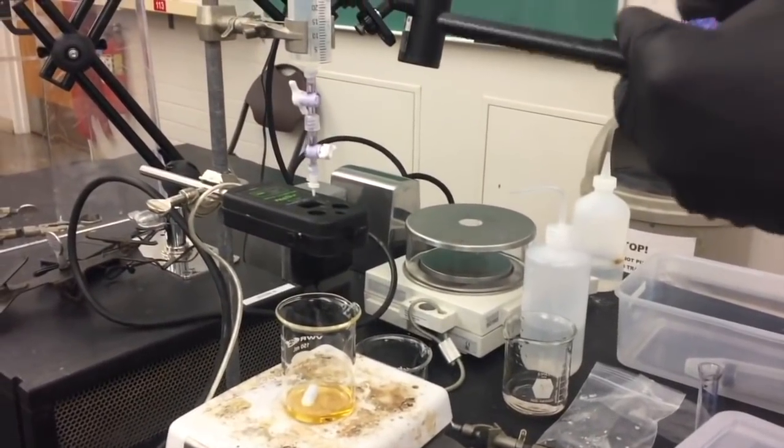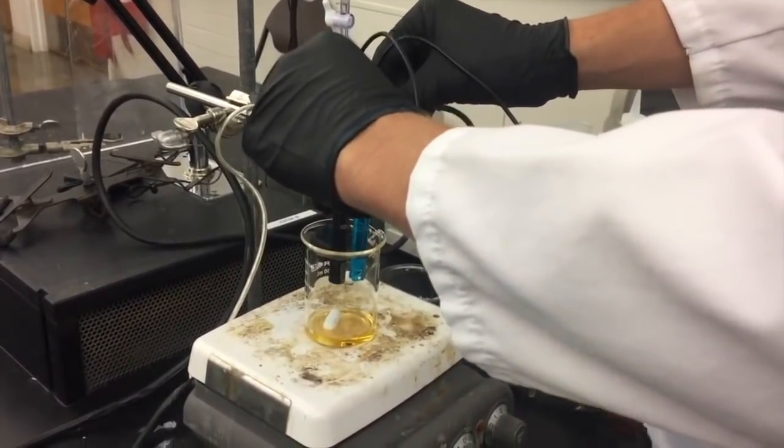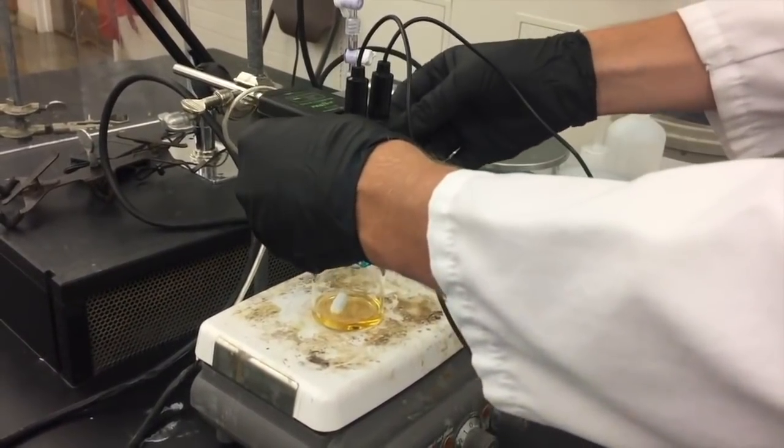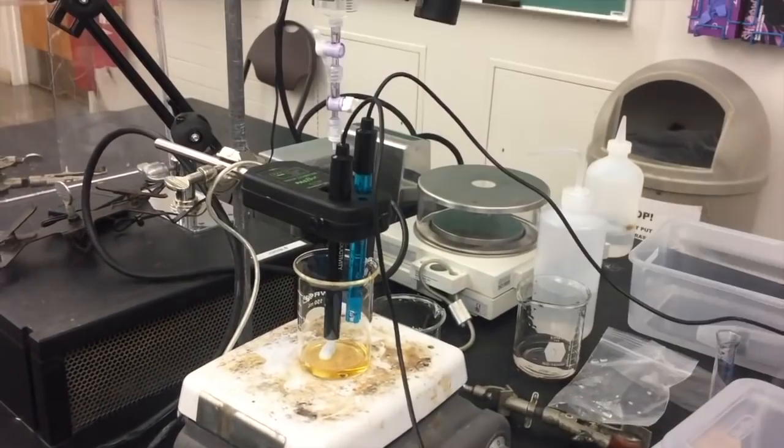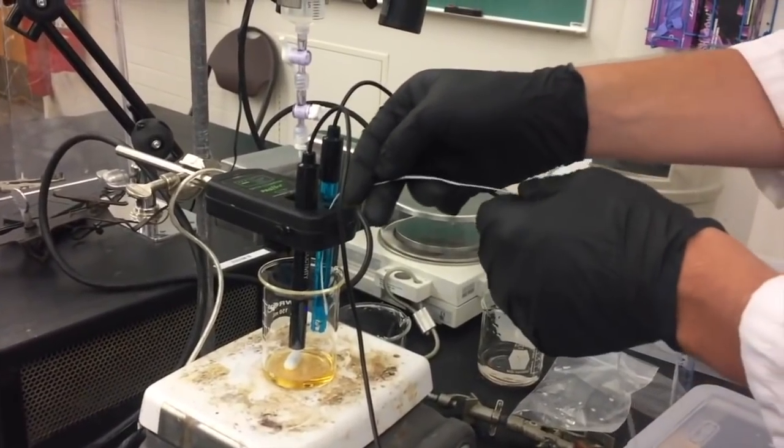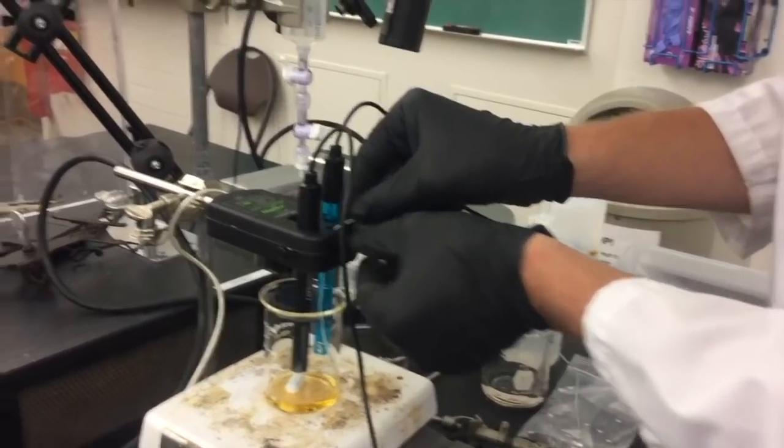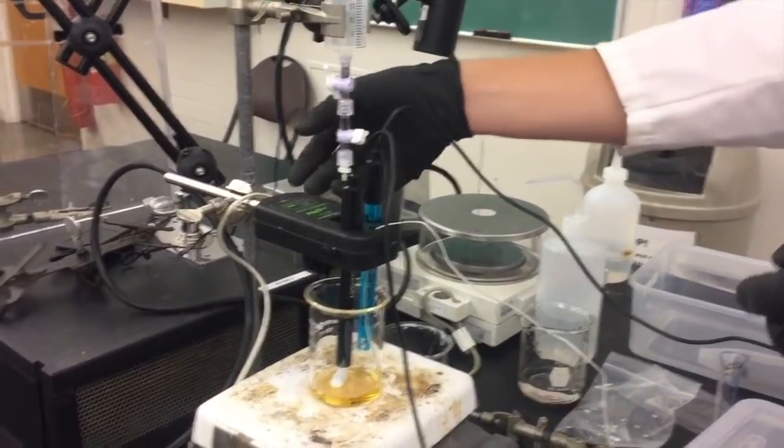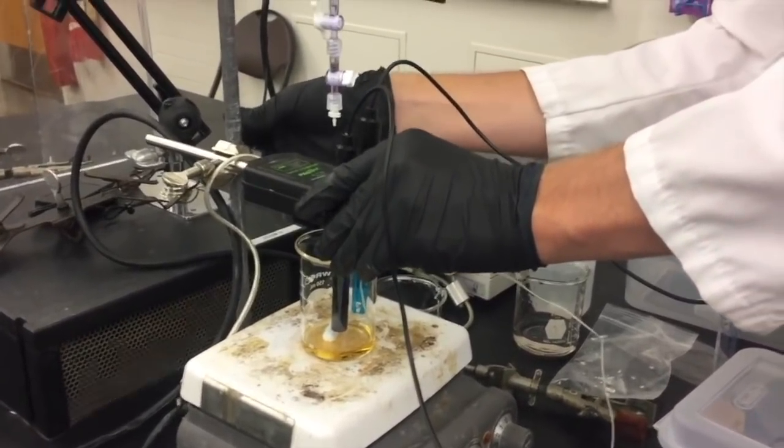Now we're going to position and adjust all of the probes. You should place the pH and conductivity meters through the big holes at the front of the drop counter like this and the thermometer should be placed through the smallest hole in the middle. Now you'll need to adjust the height of the probes. You want them to be as close to the bottom of the beaker as possible without touching the stir bar. You can use the screws on the sides of the drop counter to hold the meters in place.